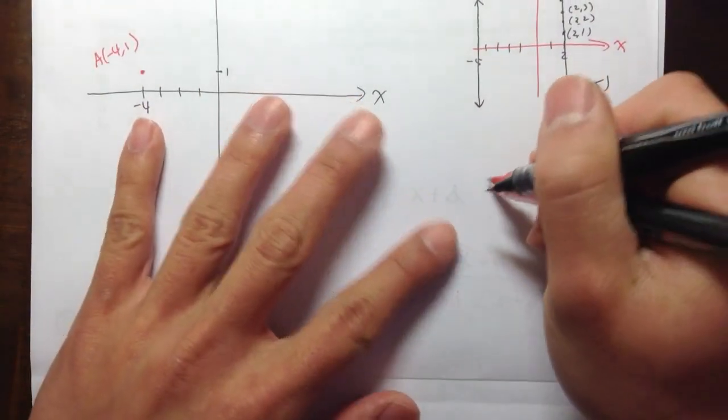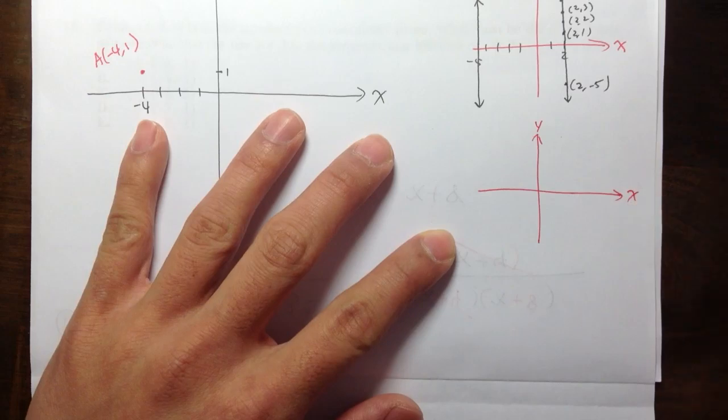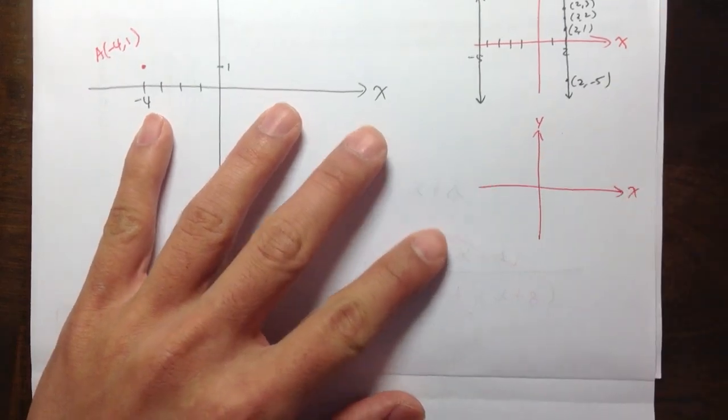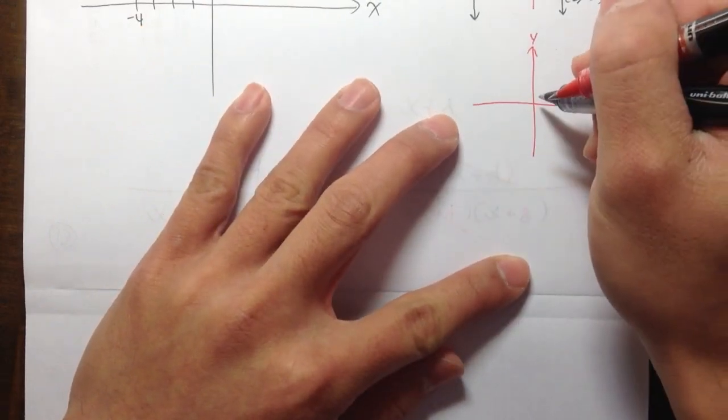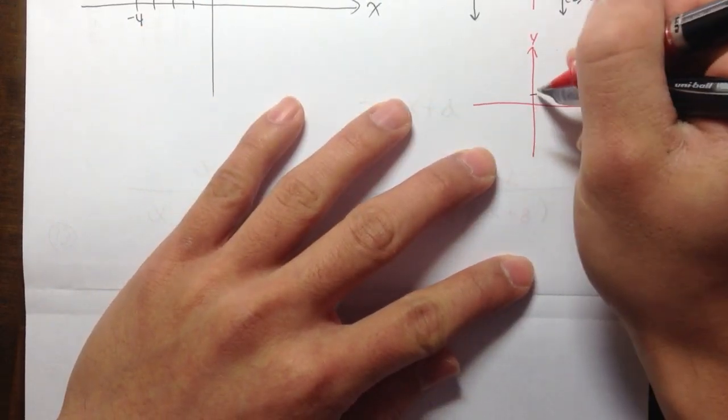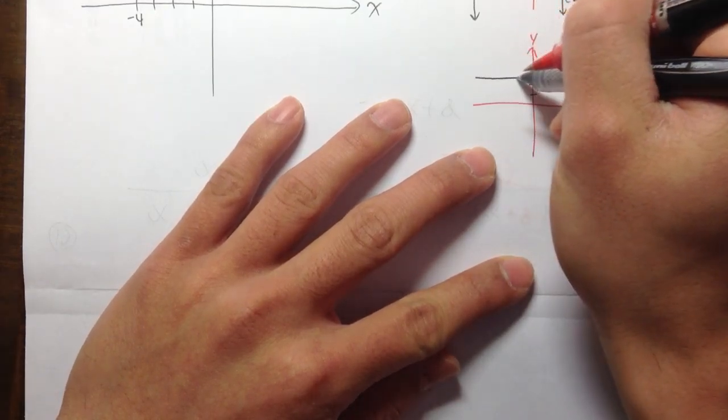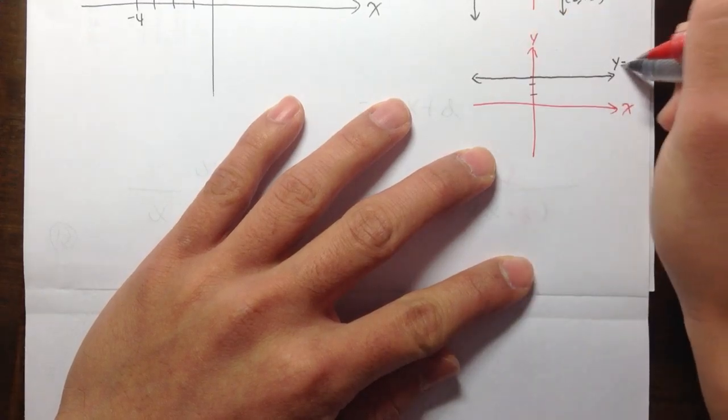Likewise, just some practice. What happens if the graph is asking us to graph like y is equal to 3, for example? So if I want to graph y equals 3, I will go 1, 2, 3 on the y, and y equal to 3 is a horizontal line. This line right here is y equal to 3.